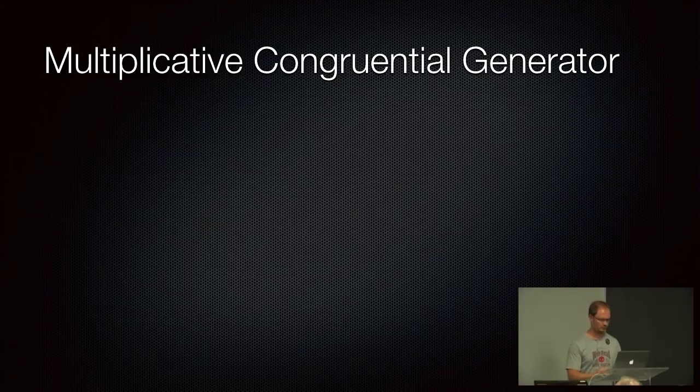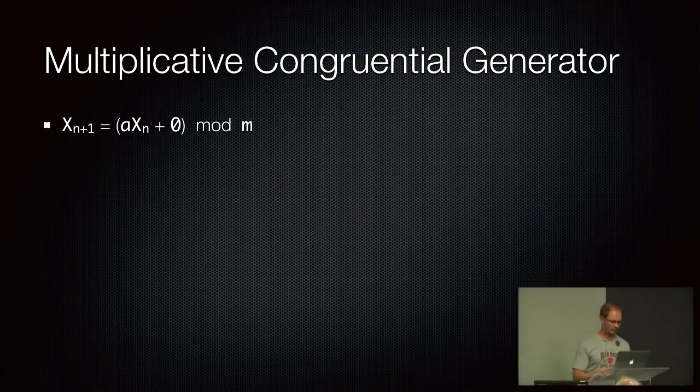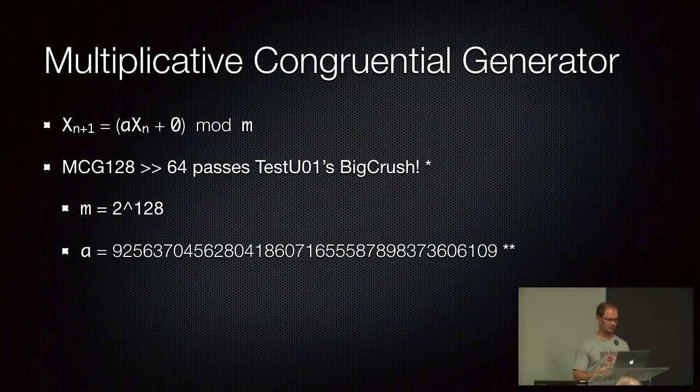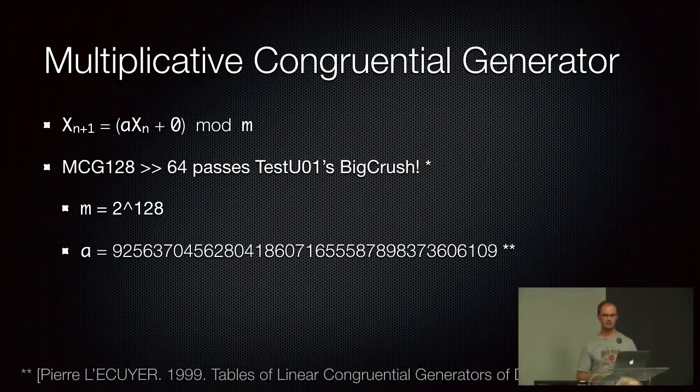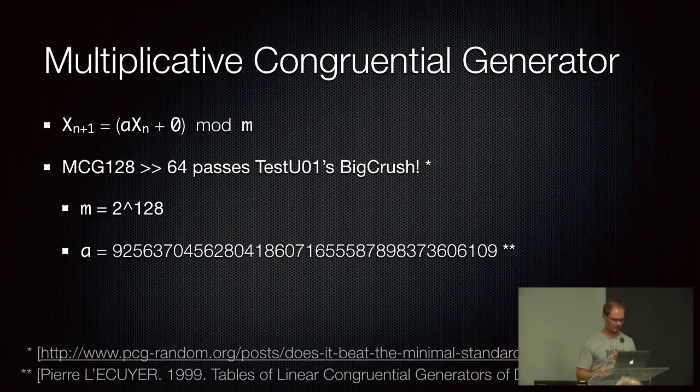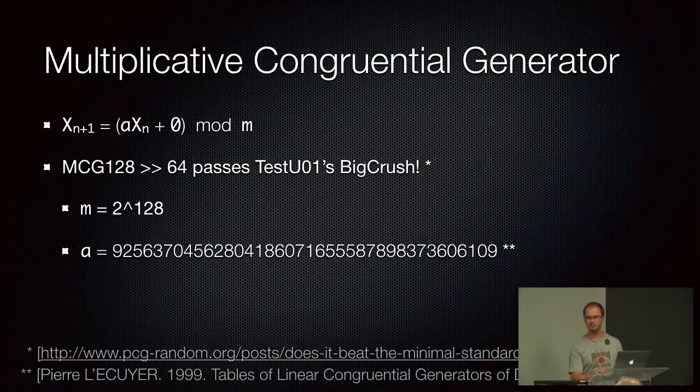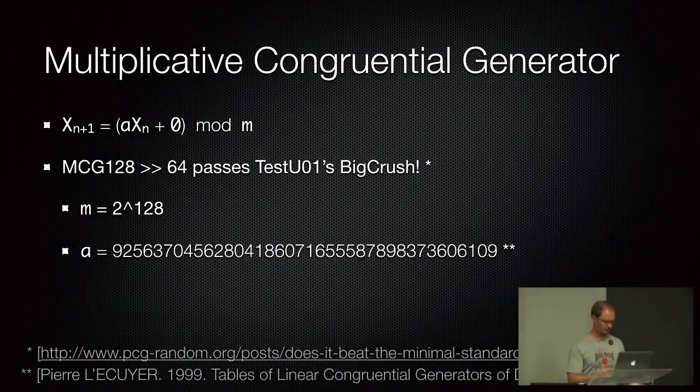A special case of the linear congruential generator is the multiplicative congruential generator, where the one constant, that c, is now zero. And again, when you get to larger bit ranges, the 128-bit one, for example, I should have stated that you take the 128-bit version and you just use the upper 64 bits. So you shift it to 64 bits, and then that 64-bit result is the one that passes the BigCrush test. And in this case, m in this formula is 2 to the 128, as I mentioned. And the constant that you would use, that a value, is this very long 128-bit value. And there's a paper from 1999, if you're interested, they list a whole bunch of these constants on which constants work well for which generators, so you can go and have a look. And this one as well passes the BigCrush. It's also mentioned in the same, does it beat the minimal standard blog or posts on that blog.